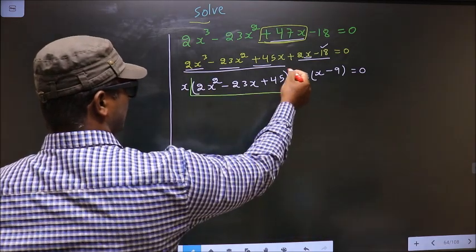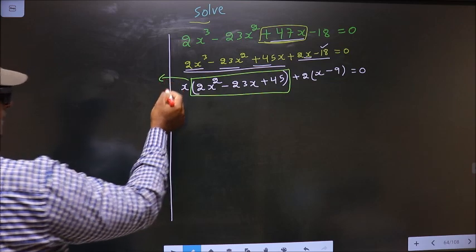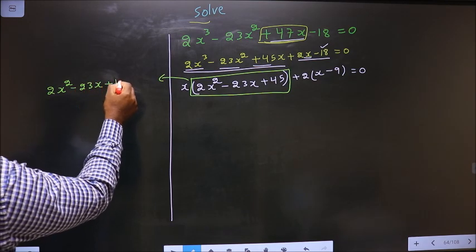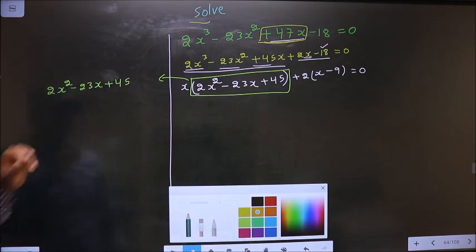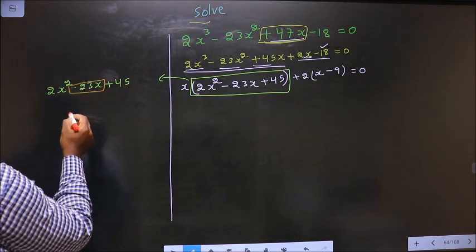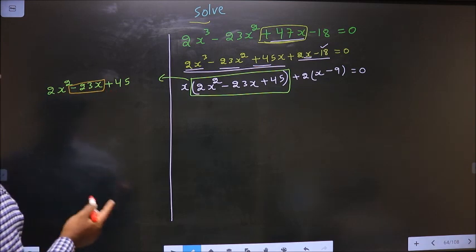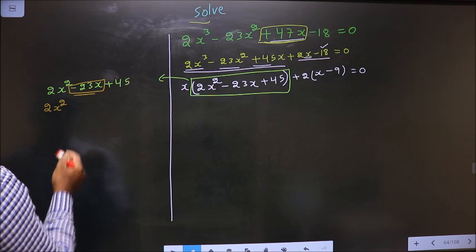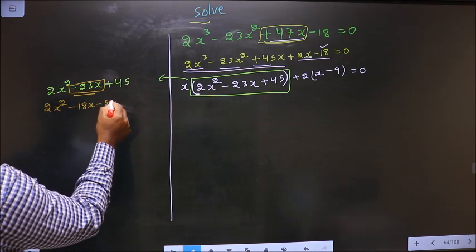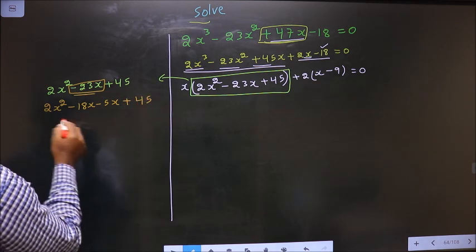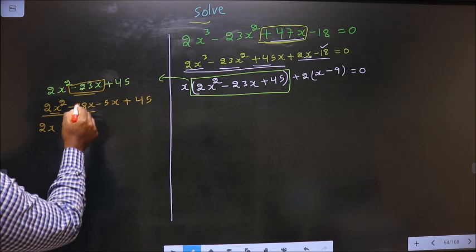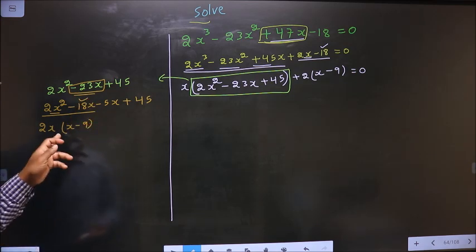Now I got a quadratic, so I will factorize it. That is 2x squared minus 23x plus 45. To factorize this, we should change the middle term, that is minus 23x. So 2 into 45 is 90. 18 into 5 is 90, and 18 plus 5 is 23. So in place of minus 23x, I write minus 18x minus 5x plus 45. What can be taken common from the first two terms is 2x, so here we get x and here we get minus 9.